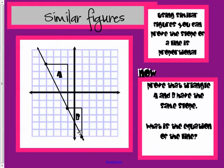Well, every line that we create has similar figures on it. And these are what we call slope triangles. So, using similar figures, you can prove that slope, the slope of a line is proportional. For example,